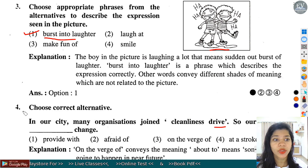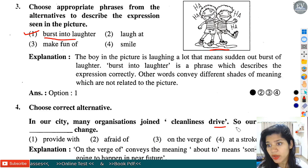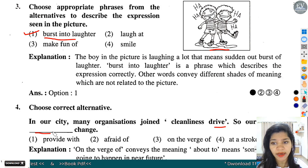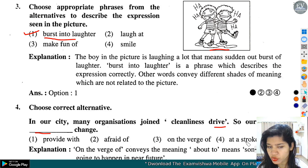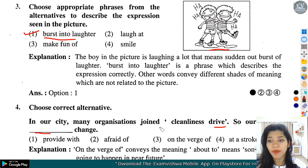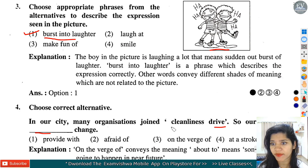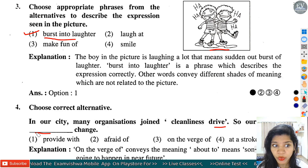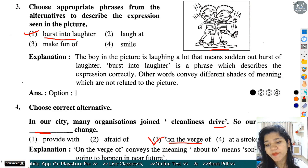Question number 4: In our city, many organizations joined cleanliness drive, so our city is dash changes. Options: provide with, afraid of, on the word job, at the stroke of. यहां पर बहुत सारे organizations ने cleanliness drive ली है, जिससे कि city में कुछ अच्छे changes आएंगे. तो option number 3 - on the word job - हमारा correct होगा.